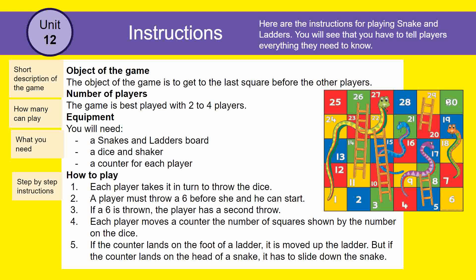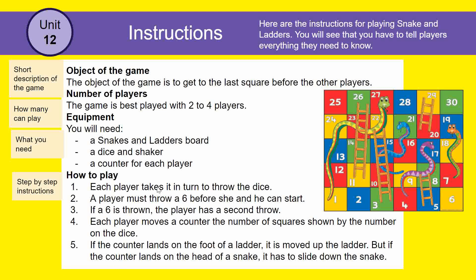Number of players: the game is best played with two to four players. Equipment: the board, a dice and shaker or cup, and a counter for each player. Then the instructions on how to play. It is quite difficult to write game instructions — you need to be very clear on how the player plays, even for a simple game like Snakes and Ladders. It's not always easy to explain without showing someone.